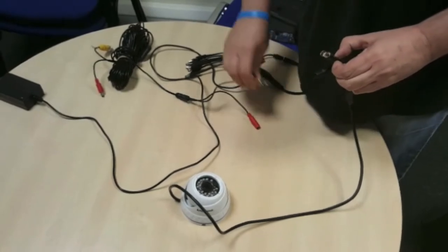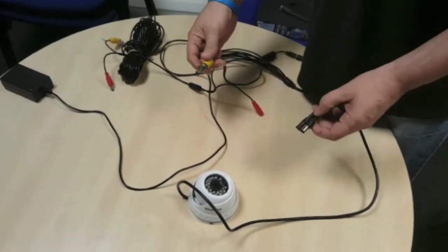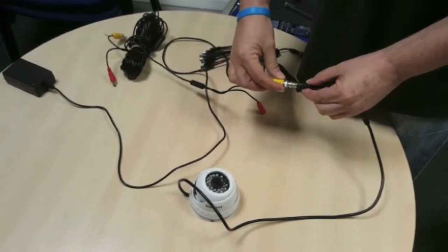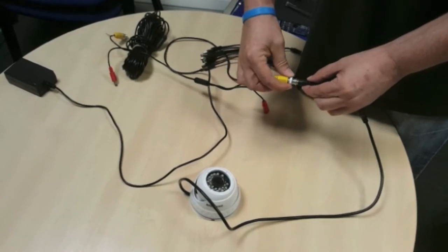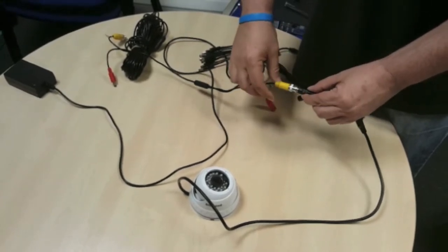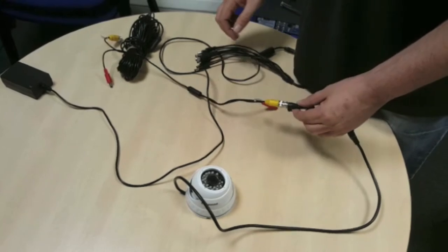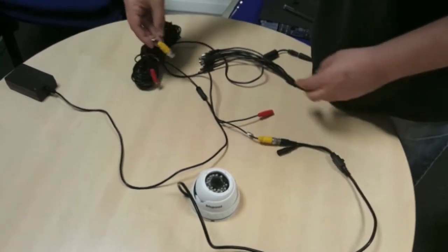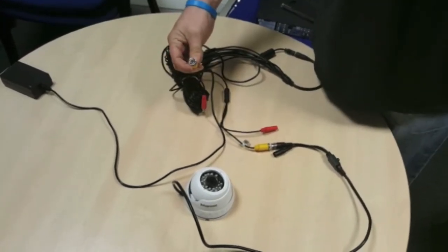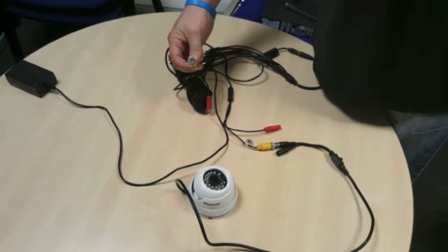You would need to use it with a female converter as you can see here. You insert and then twist clockwise in order to lock it in place, and the other end of the cable, which looks like this exactly the same, will plug into your DVR.